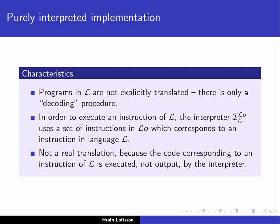In order to execute an instruction of the language L, the interpreter uses a set of instructions in L-O which corresponds to an instruction in language L. The interpreter is implemented in L-O, so we are using a set of instructions in L-O corresponding to an instruction in L. And this is not a real translation, because the code corresponding to an instruction of L is executed by the interpreter — it is not output. It is not a real translation in the sense that when we compile a program, the code is output by the compiler. Here, no code is output; it is executed — the instruction of L is executed directly.